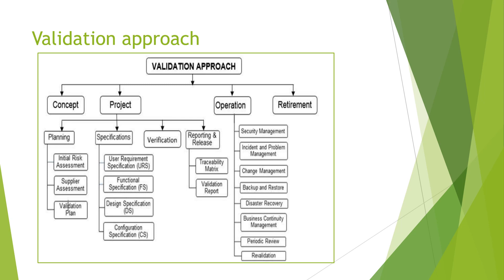In the specification phase, the user who will run the system — for example, a quality control user running a chromatography system — provides a User Requirements Specification (URS) document. Based on the requirements, we cover the functional specification, configuration specification, and design specification. From these, we create test cases in the IQ/OQ/PQ protocol documents to verify all requirements.